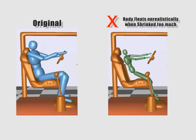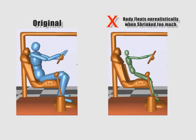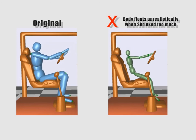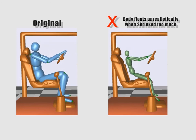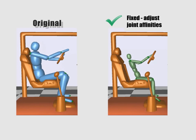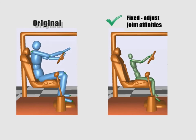When scaling down too much with limbs outstretched, the body may float in the air unrealistically. We can solve this by manually adjusting joint affinity values.